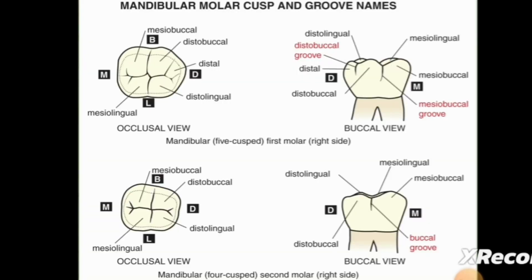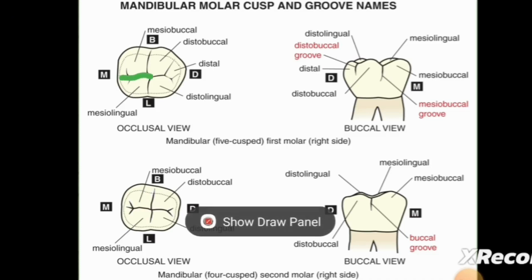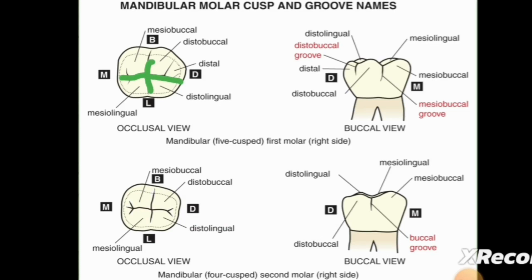As you can see in the image in the occlusal view of the first molar, you can see the main developmental groove right here, and these others extend out from it — those are the supplemental grooves, supplemental to the main middle developmental groove.